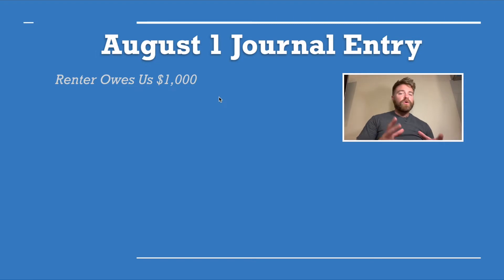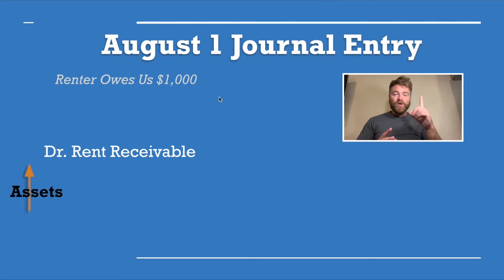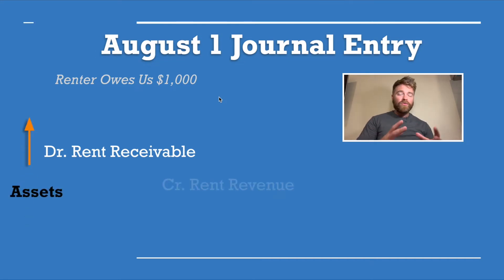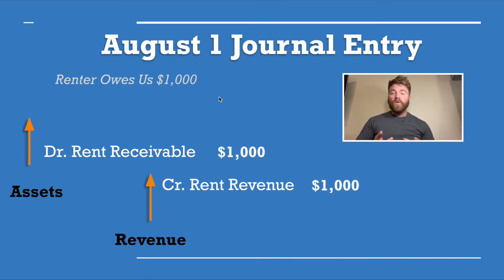To record that, we debit rent receivable, showing assets going up. And we credit rent revenue, showing revenue going up. Each of those is for $1,000 to be received at a later date.